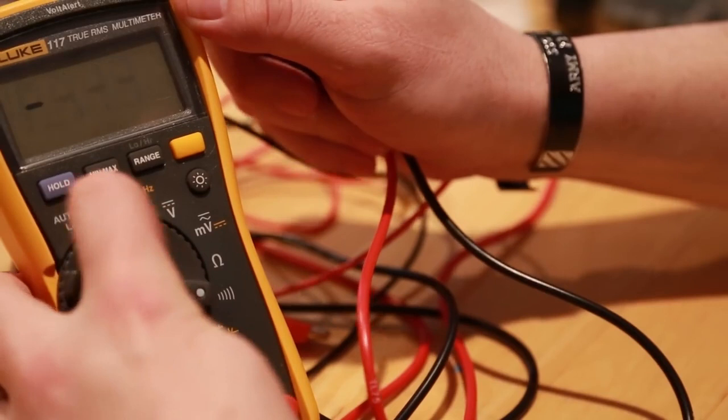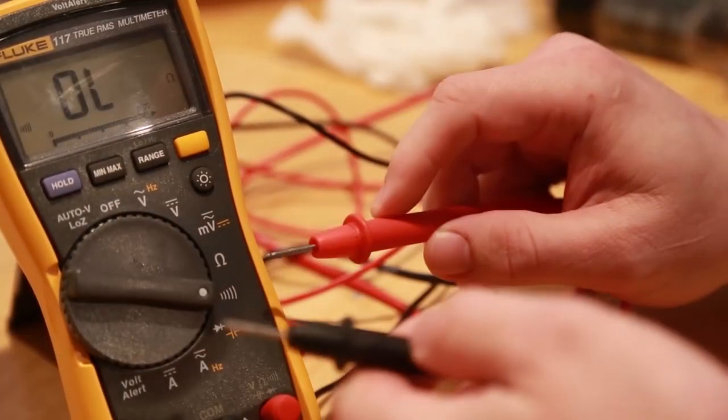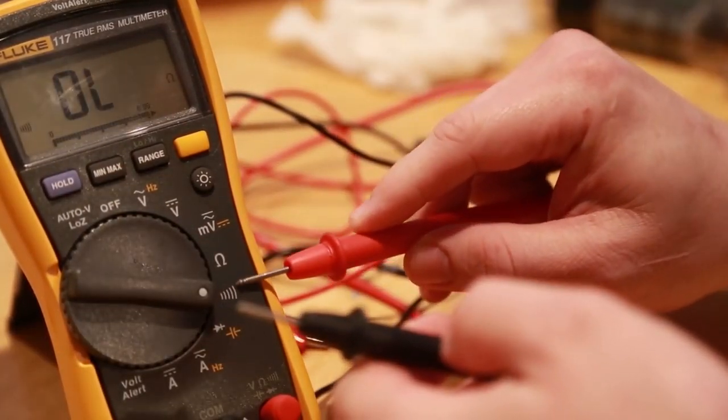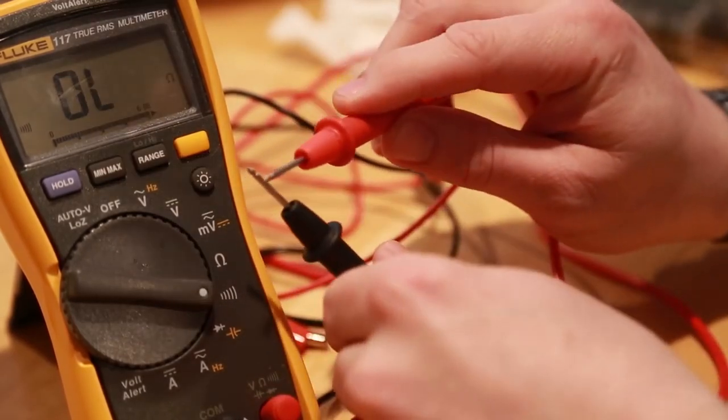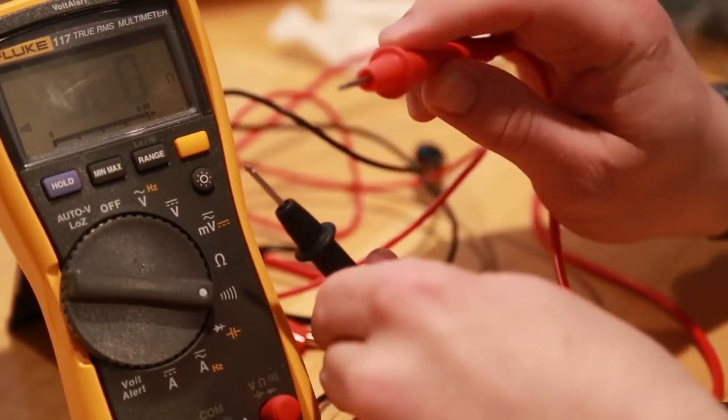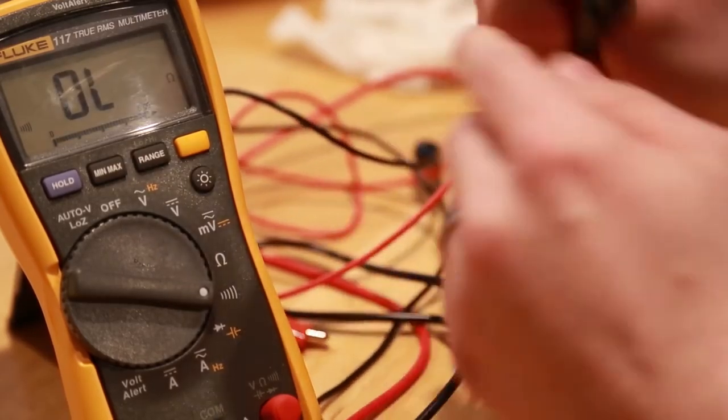So if you put your multimeter on the continuity mode, which has this little symbol that looks like a sound wave, what that means is when you connect your two probes together it makes a noise meaning that it detects the electricity is flowing.